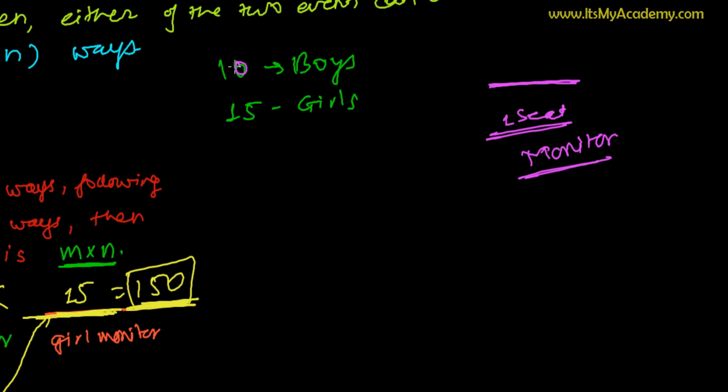So altogether, there are 25 students (10 plus 15) and it can be anyone. The monitor can be a boy, the monitor can be a girl, because girls are equal nowadays. So there may be a boy monitor or may be a girl monitor. If the monitor is a boy, then there are 10 ways of selecting from the 10 boys - anyone can be selected.